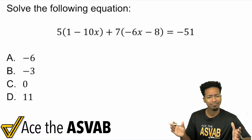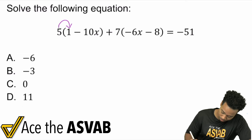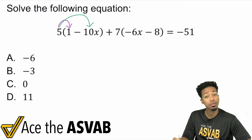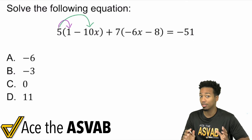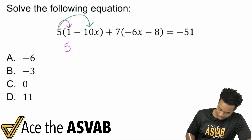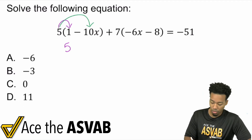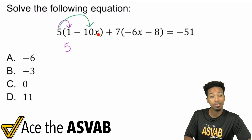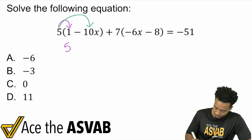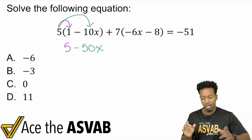Take it one step at a time. I'm going to take that five and distribute it to the one and distribute it to the negative 10X. Remember to really recognize the sign — that's really important. Five times one is going to be five. And then five times negative 10X: positive five times negative 10 is going to be negative 50X. And that's it.